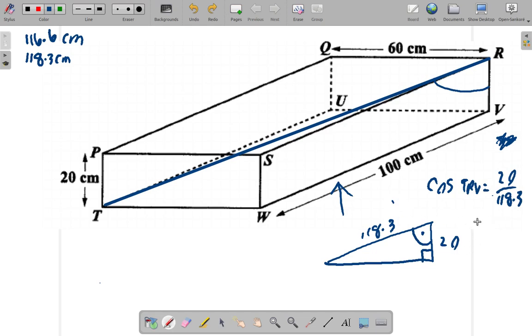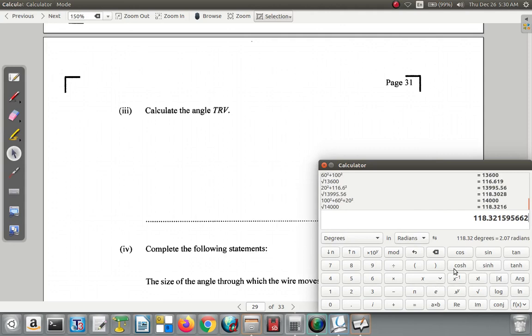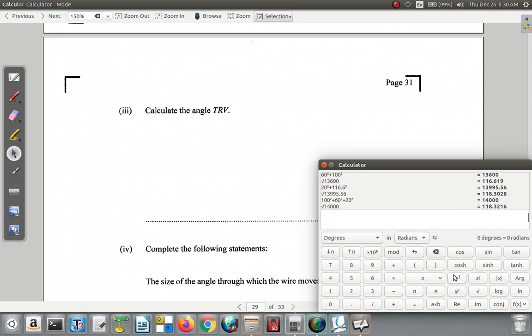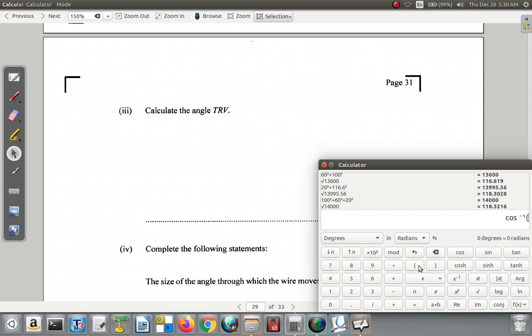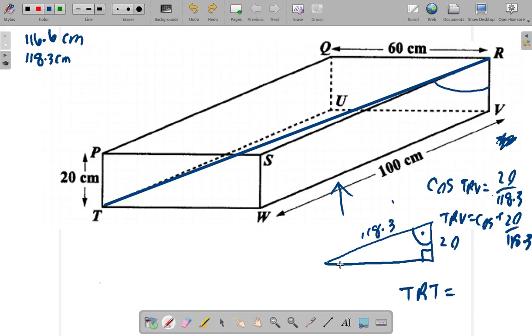So TRV would be the cosine inverse of 20 over 118.3. Let's finish it down here. What is TRV? Cosine inverse of 20 over 118.3. So we have the cosine inverse of 20 over 118.3, close bracket, equals 80.2 degrees. So it is 80.2 degrees.